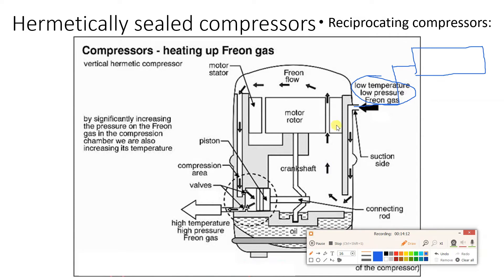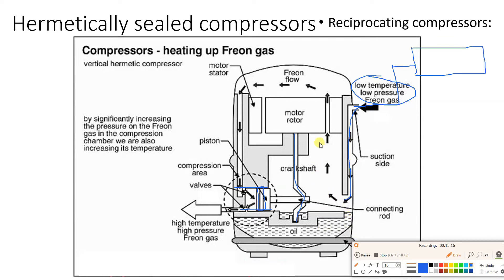A large amount of heat is generated because of the reciprocating motion. The motor operates the connecting rod, which moves the piston inside the cylinder. The suction low temperature, low pressure refrigerant enters from one side, and it picks up heat from the oil. This oil is required for lubrication due to the reciprocating motion. The oil provides lubrication and picks up heat generated between the piston and cylinder, while the refrigerant cools the oil and keeps the motor cool.